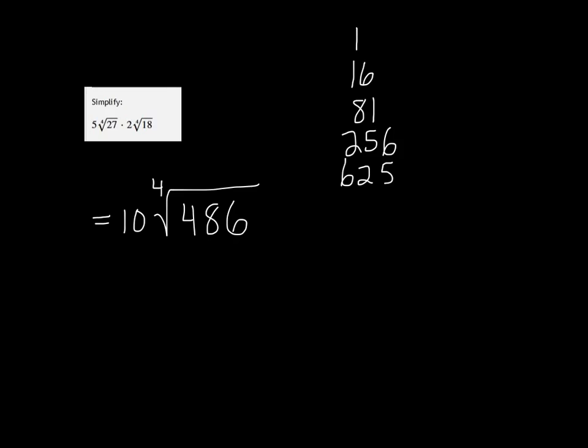Ah, that one works. So 486 is the same as 81 times 6. The 4th root of 81 comes out as 3, so we get 30 times the 4th root of 6.